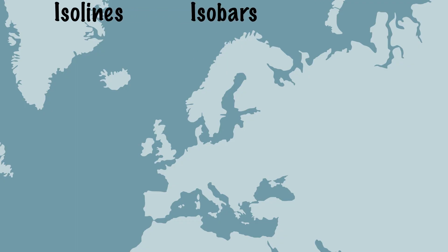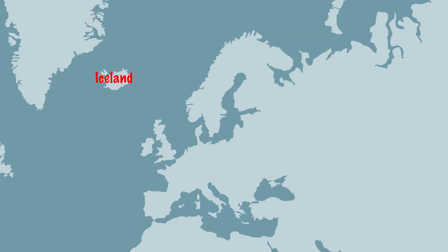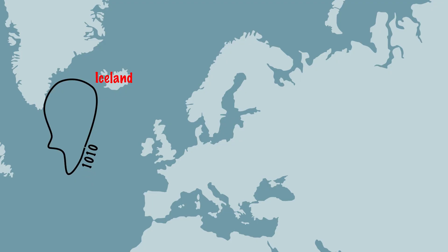Southwest of Iceland there are places where the air pressure is 1010 millibars. We connect these dots. Within that are places where the air pressure is 1000 millibar and places where the air pressure is 990 millibar.